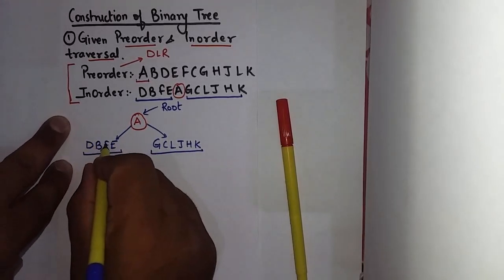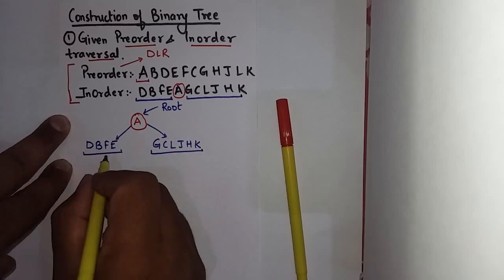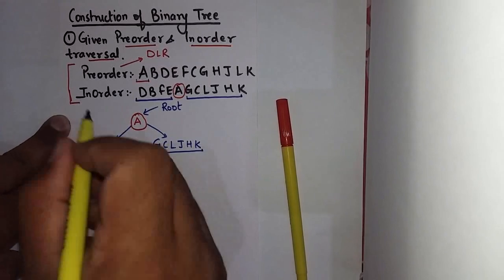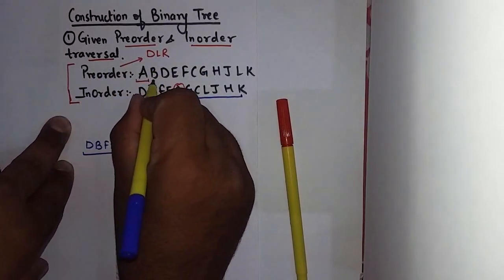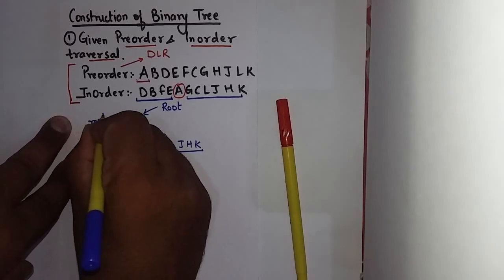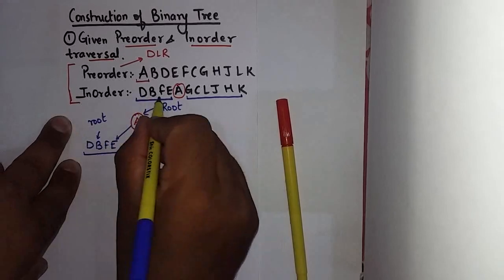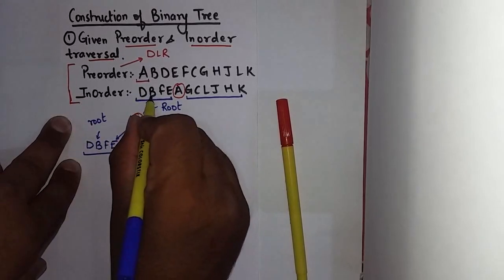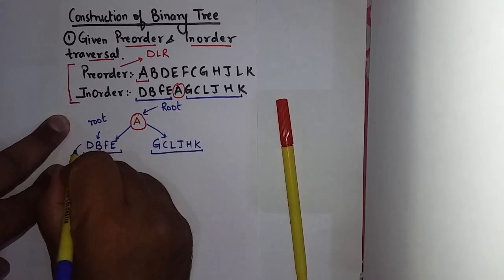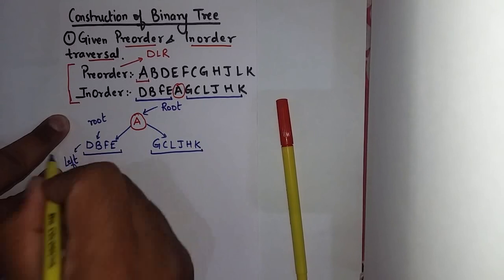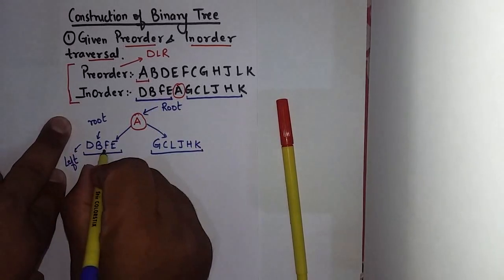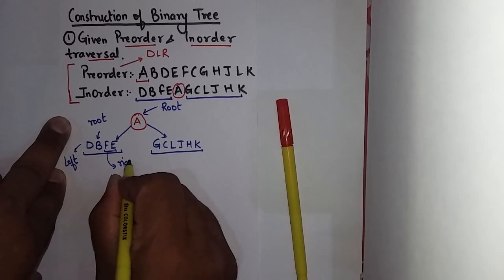Now if I follow the same procedure again for this, check this. Out of D, B, F, E which occurs first in preorder? B. So B will become the root node. And check here. Items left to the root node B are part of left subtree. So D becomes part of left subtree. And F, E becomes part of right subtree.